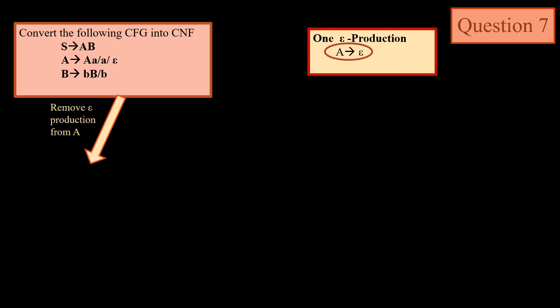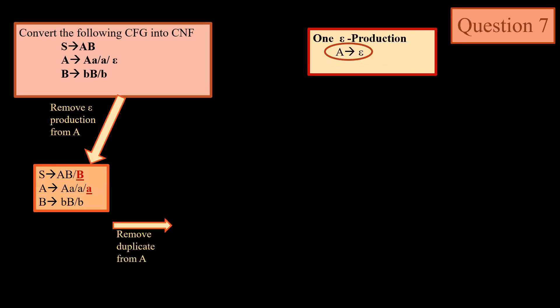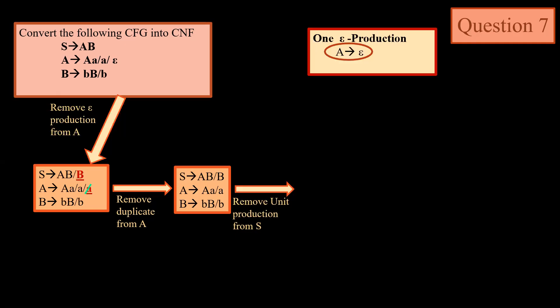Now we have to convert a grammar into Chomsky Normal Form. Before converting to CNF, we need to check for epsilon, unit, and useless productions. There is only one epsilon production: A → ε, so we remove that. The output corresponding to this in S will be S → B, and in A we will have A → a. Epsilon will be removed from A. We remove the duplicate from A since we have two copies. Now we remove the unit production S → B.